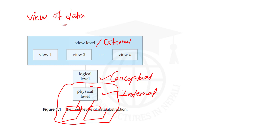The physical level is the lowest level of abstraction. The physical level tells about how data is actually stored in the database. It deals with the actual storage of data, and what is hidden at this level is the complex data structures used — that is the physical level of abstraction.